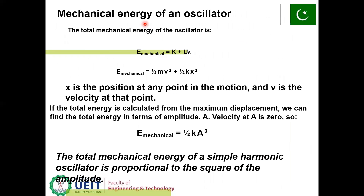Mechanical energy of an oscillator: the total mechanical energy is E_mech = K + Us = (1/2)mv² + (1/2)kx², where x is the position and v is the velocity at that point. If total energy is calculated from maximum displacement — the amplitude A — then at x = A, v = 0, so E_mech = (1/2)kA². The total mechanical energy of the simple harmonic oscillator is proportional to the square of the amplitude.